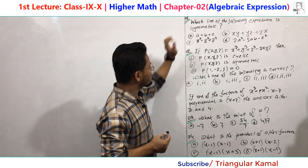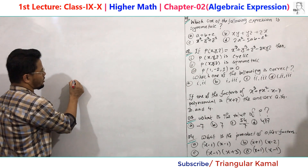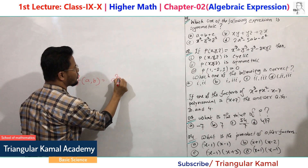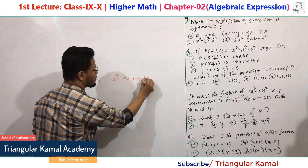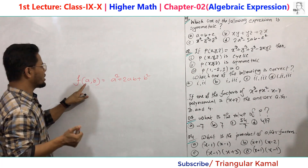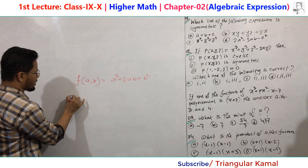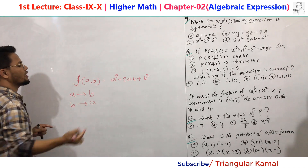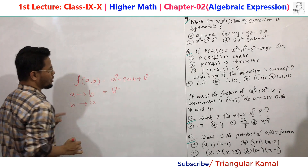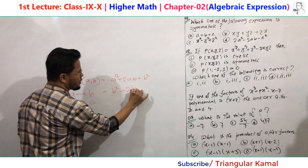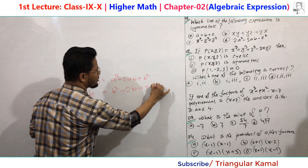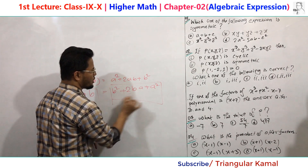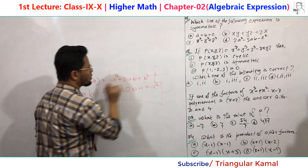A symmetric expression is like f(a,b) = a² + 2ab + b². There are two variables a and b. If we change a to b and b to a, the result will be b² + 2ba + a², which is the same as the previous one.